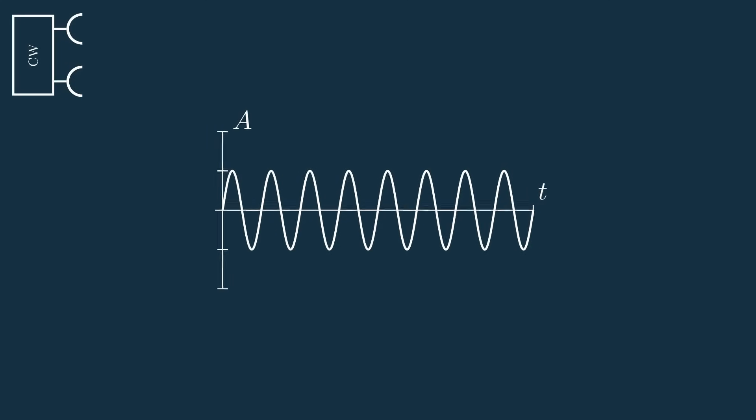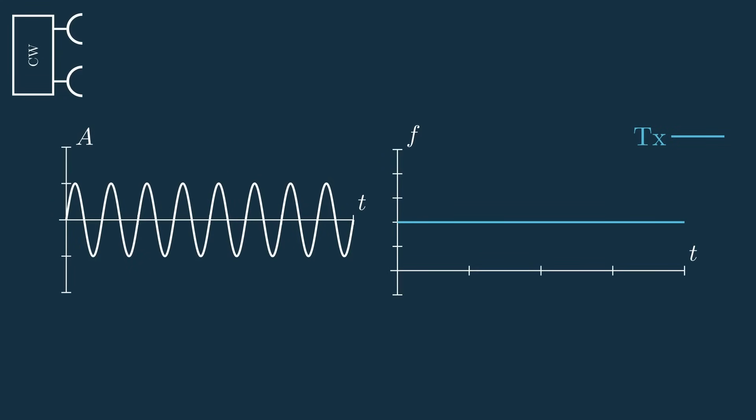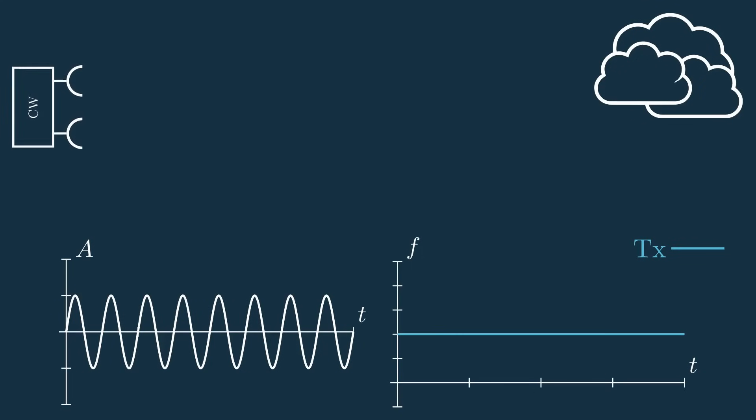Here we have the amplitude versus time, but what if we looked at it in terms of frequency versus time? Since we're just transmitting a sine wave at a single frequency, this is just a horizontal line for the CW system. Once we start transmitting our CW signal, we have to wait some time for it to return. If our target is moving towards us, the entire signal's frequency will be shifted up and down if the target is moving away.